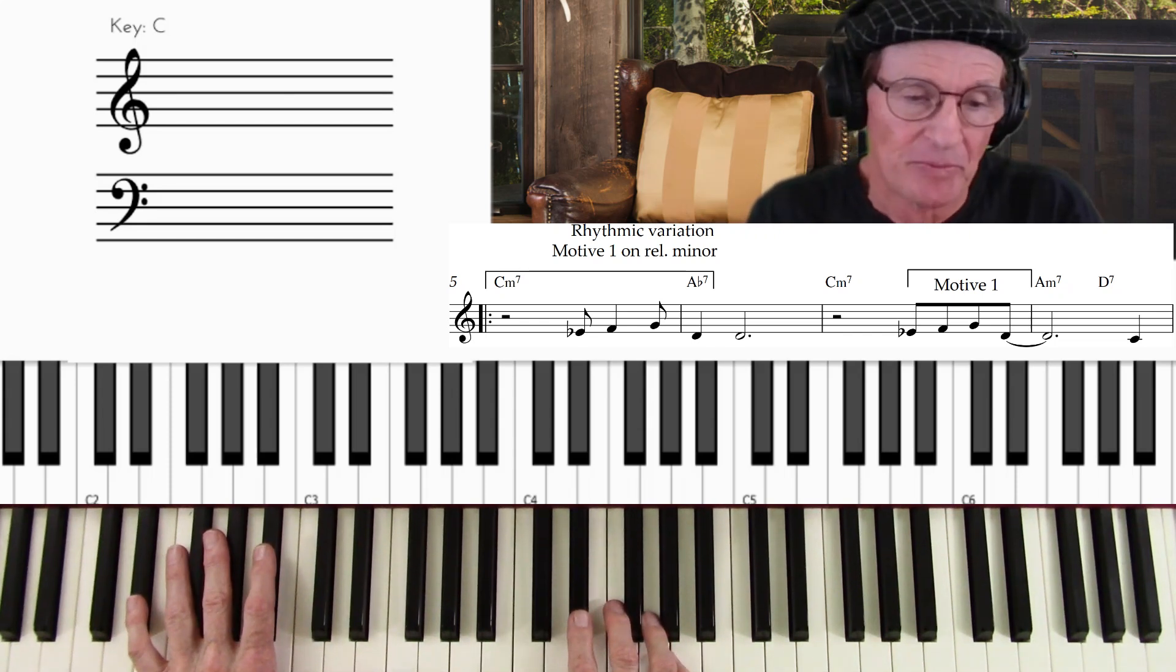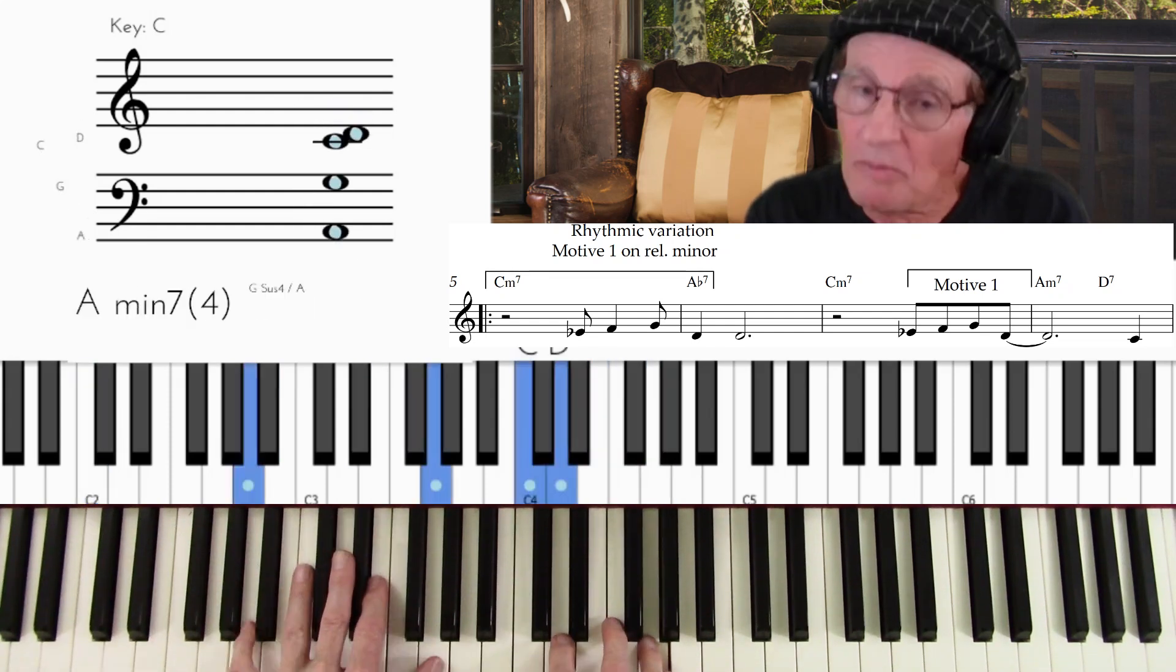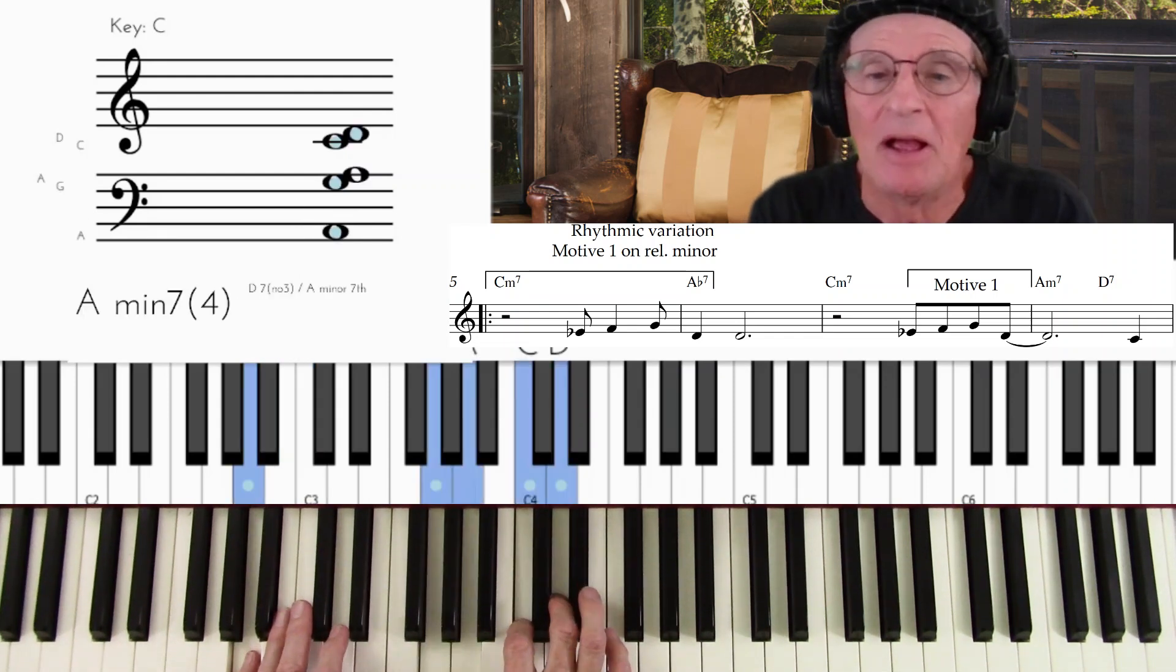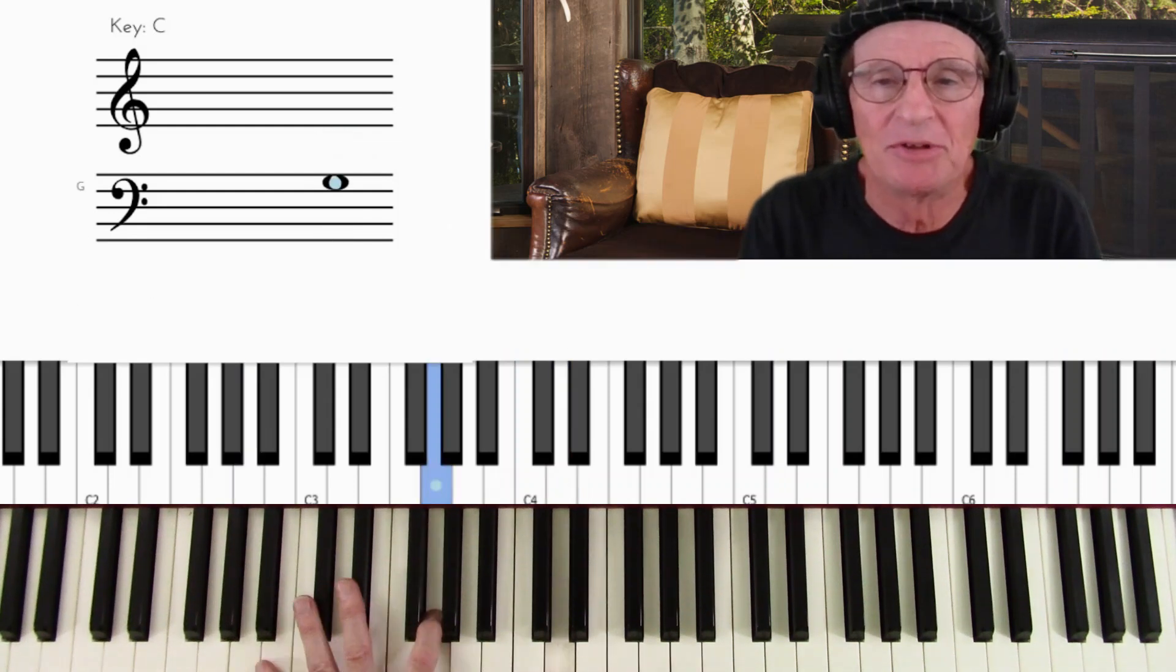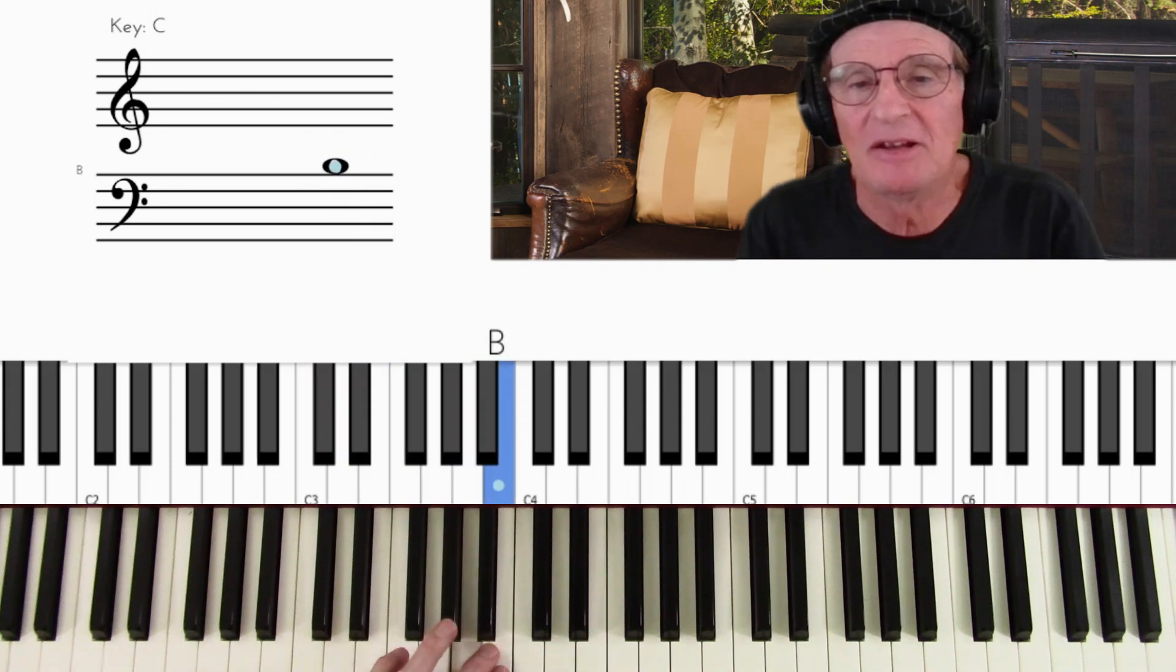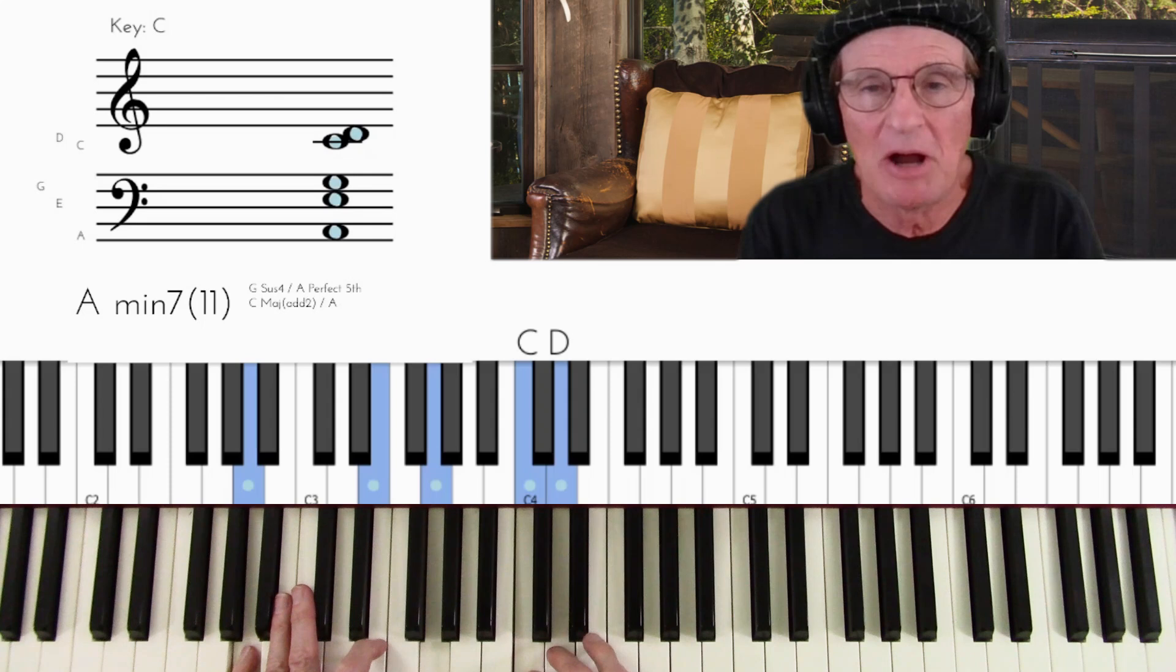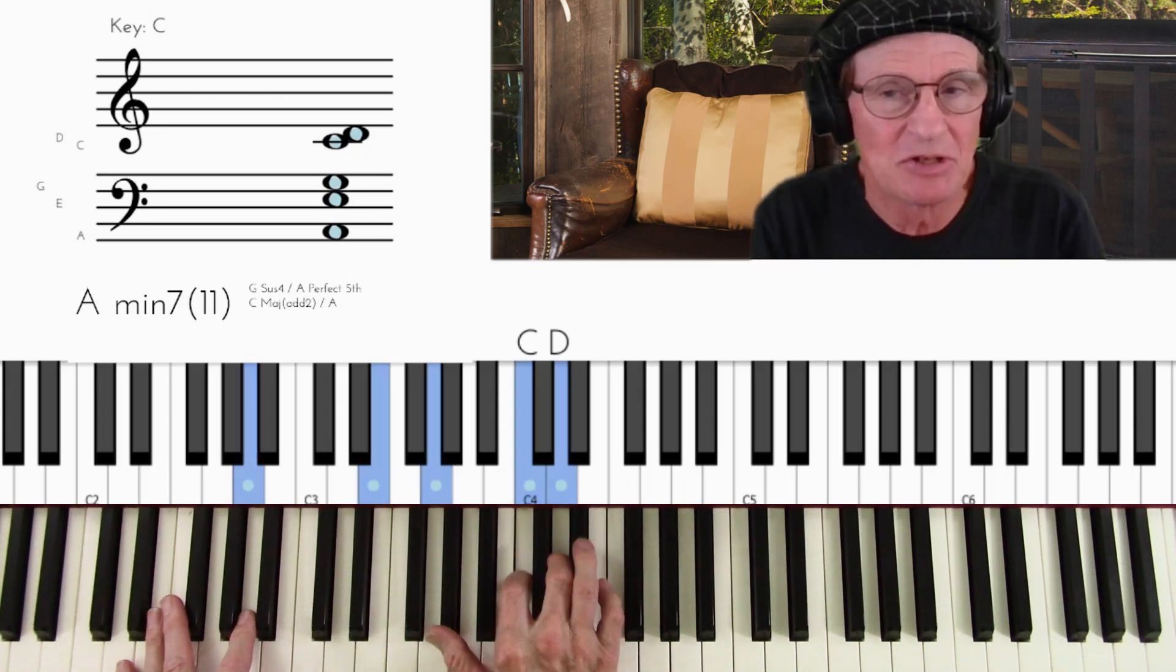Descending, down to A minor. Now, important thing to understand here is that melody note is the eleventh. So it's like one, two, three, four, five, six, seven, eight, nine, ten, eleven. You see, it's the eleventh step of the scale above the A minor, because you're going to hear that eleventh appear a number of times in this song.